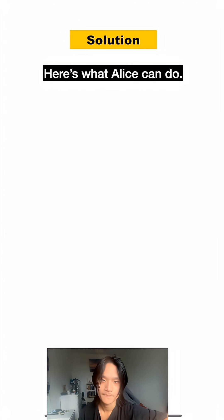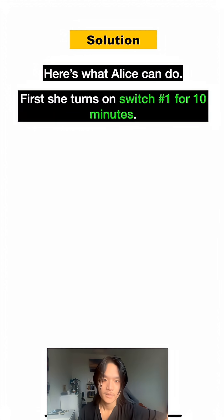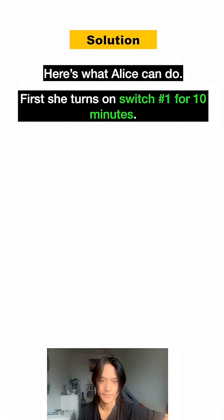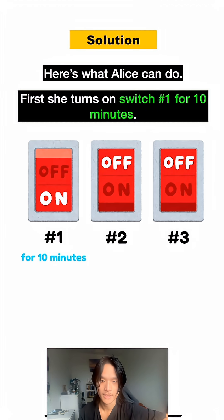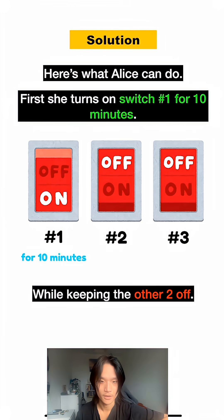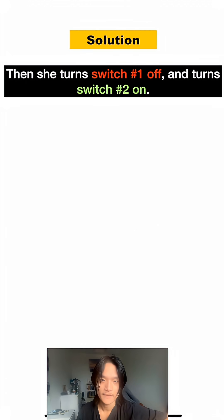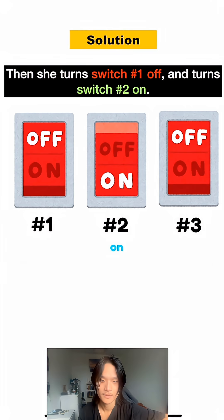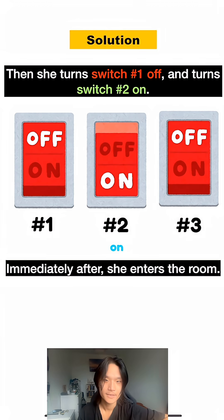Here's what she can do. First, she turns on switch number one for 10 minutes, while keeping the other two off. Then she turns switch number one off and turns switch number two on. Immediately after, she enters the room.